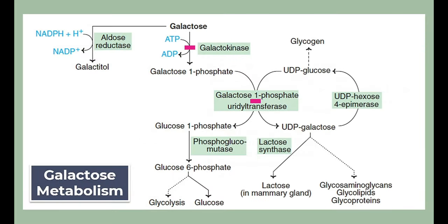Galactose is a blood sugar present in milk products. When galactose goes to the liver it undergoes galactose metabolism. First, galactose is converted into galactose-1-phosphate by galactokinase — kinases are ATP-dependent enzymes that add a phosphate group. Then galactose-1-phosphate combines with UDP-glucose with the help of galactose-1-phosphate uridyl transferase, also abbreviated as the GALT enzyme.